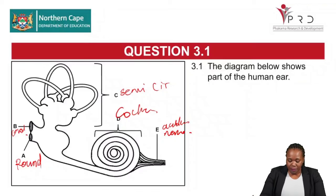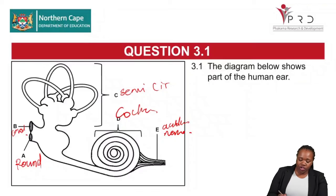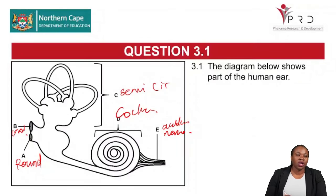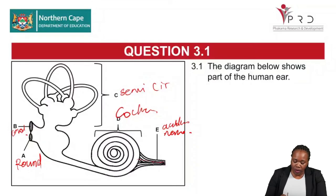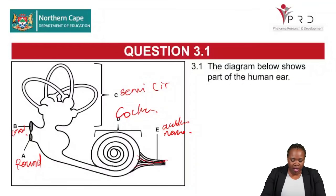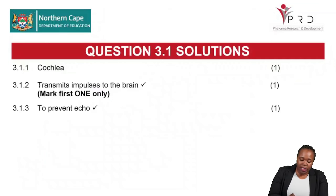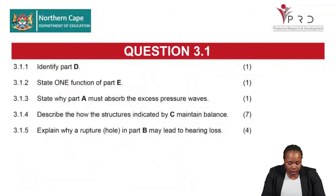Remember: when stimuli reach the organ of Corti in the cochlea, the organ of Corti converts the stimulus into an impulse. That impulse is then transmitted by the auditory nerve to the brain. So the auditory nerve transmits impulses to the brain.